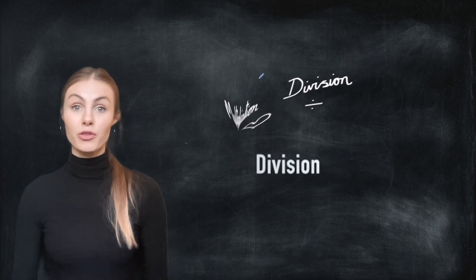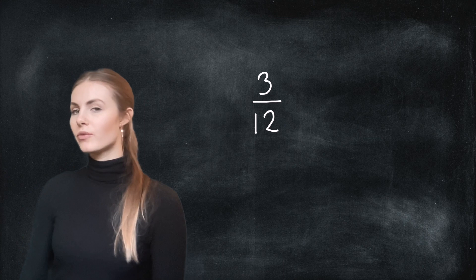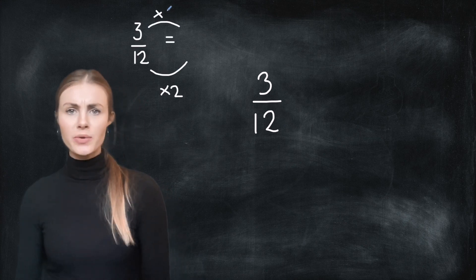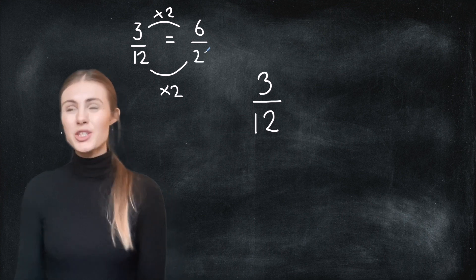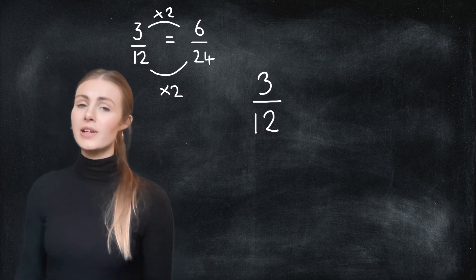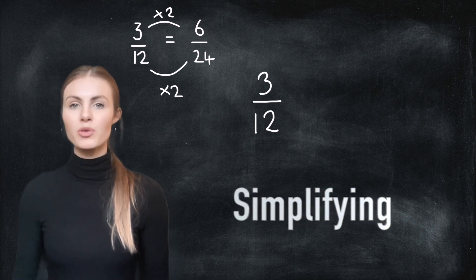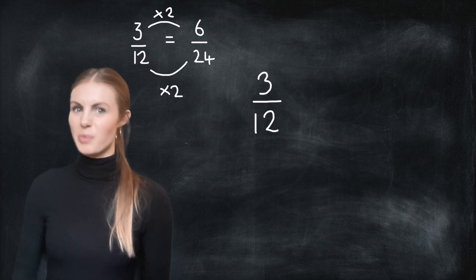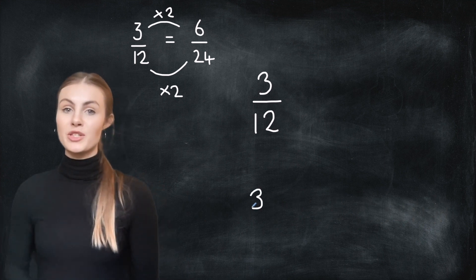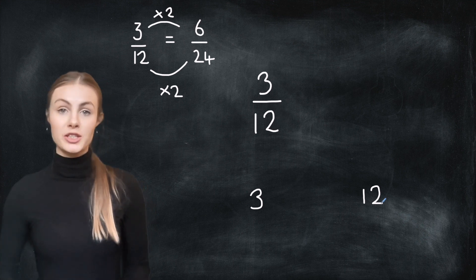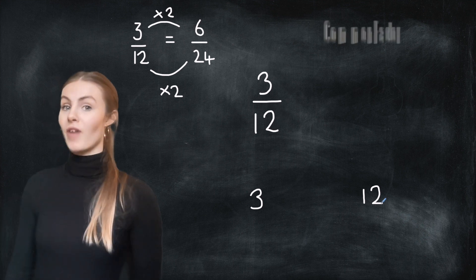Let's take an example of three twelfths and we want to find an equivalent fraction. So we could multiply both the top number and the bottom number by two and end up with six twenty fourths. But six twenty fourths is not very useful and actually three twelfths is a lot easier to deal with. So let's try and make our digits smaller. This is called simplifying. We want our fraction in the most simple form. That means the smallest digits possible. So we have to look at our numbers three and twelve and we have to find a number that both of them can be divided by. This is called a common factor.